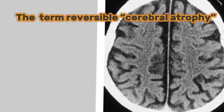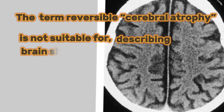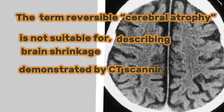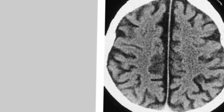The term reversible cerebral atrophy is not suitable for describing brain shrinkage demonstrated by CT scanning, because atrophy implies cellular loss and irreversibility.